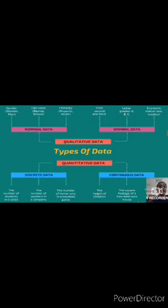Like that, in discrete data, what is discrete data? That is only countable numbers, which is the number of students in a class, the number of workers in a company, the number of home runs in a baseball game. Next, continuous data. Continuous data is the height of children, the square footage of a two-bedroom house.